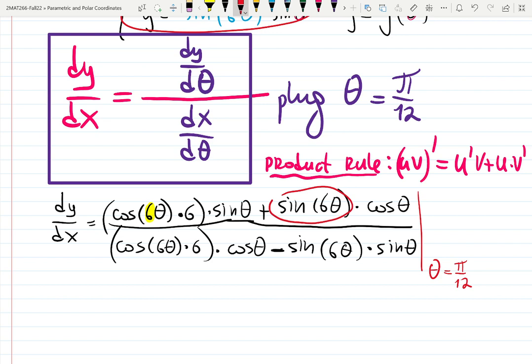Luckily, sine of pi over 12 multiplied by 6 becomes sine of pi over 2. Sine of pi over 2 is just 1. Cosine of pi over 2, on the other hand, is zero. So we only have the right-hand sides. It's cosine over minus sine of pi over 12. Nice.